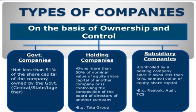On the basis of ownership and control: government companies — not less than 50% of the share capital of the company is owned by the government, whether central, state, or together. Holding companies — owns more than 50% of the nominal value of the share capital of another company, or is controlling the composition of the board of directors of another company — example, Tata Group. Subsidiary company — it is controlled by a holding company since it holds less than 50% nominal value of the share capital — example, Reebok, TCS.